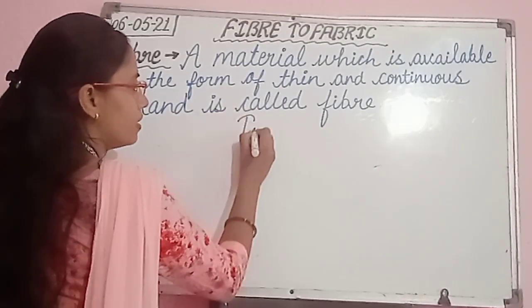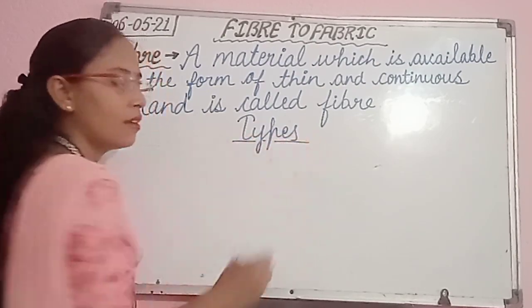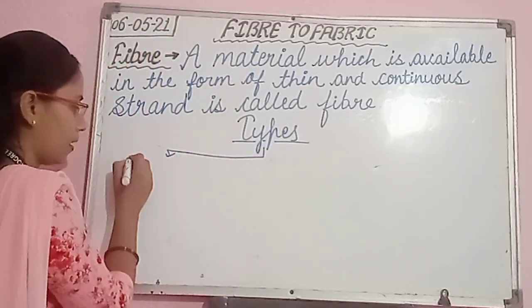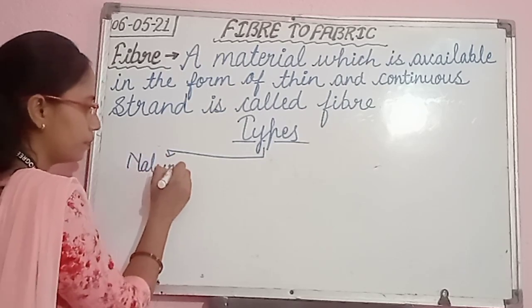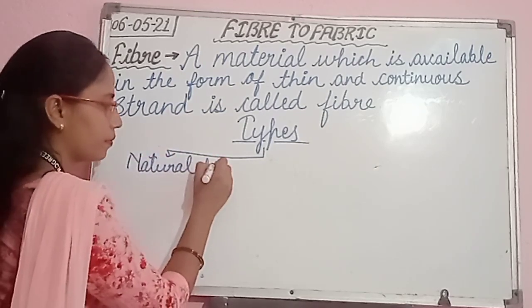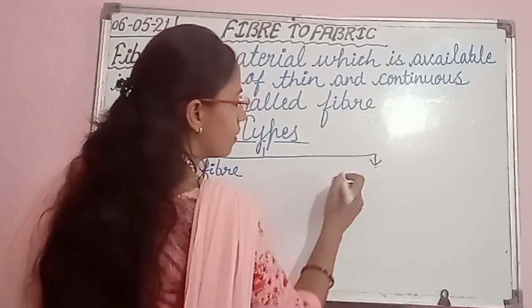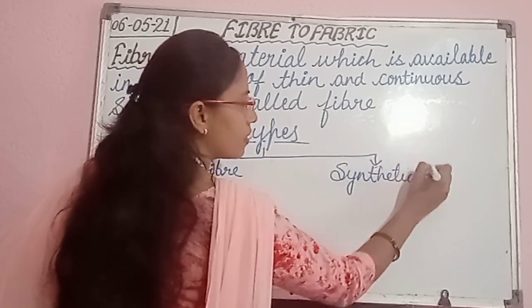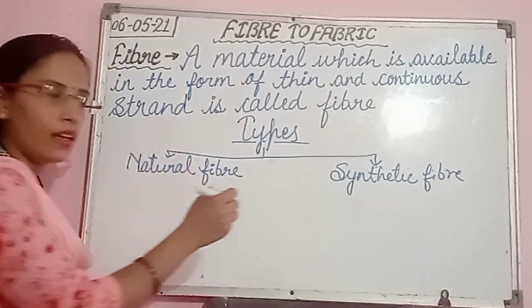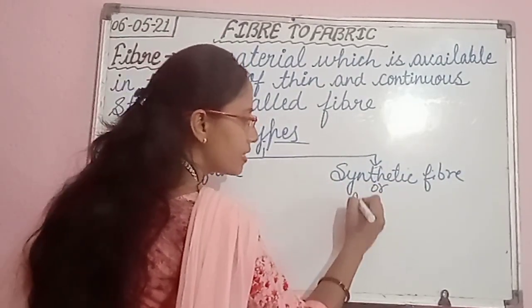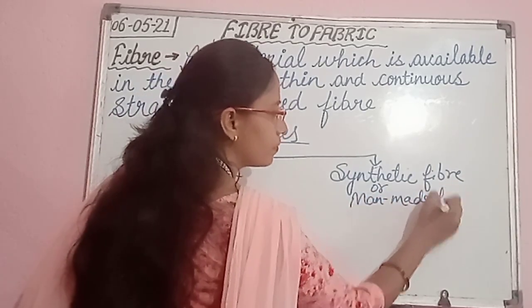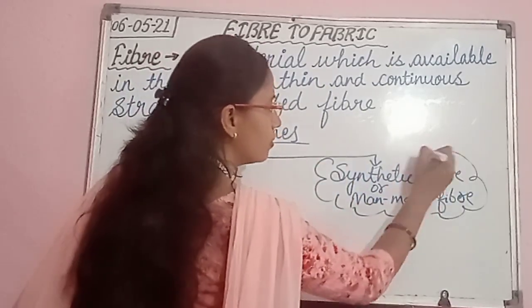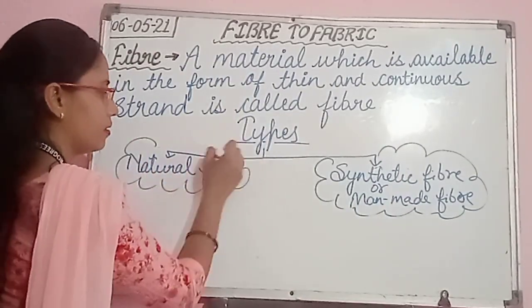Now the next topic is types of fiber. Generally the fibers are of two types. The first one is natural fiber and the second one is synthetic fiber. Synthetic fiber is also known as man-made fiber. So these are the two types of fibers - natural and synthetic.